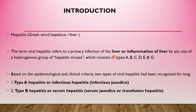This liver infection is caused by many heterogeneous groups of hepatitis viruses such as hepatitis A, B, C, D, E, and G. Type A comes under the food and waterborne diseases, discussed in detail in another video. In this part, we are majorly concerned with type B, which is also called serum hepatitis, serum jaundice, or transfusion hepatitis. Types A and B have major epidemiological and clinical importance.